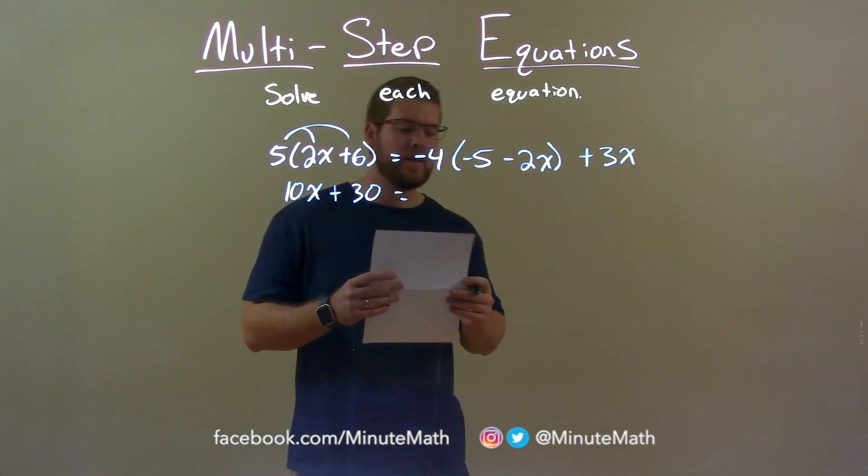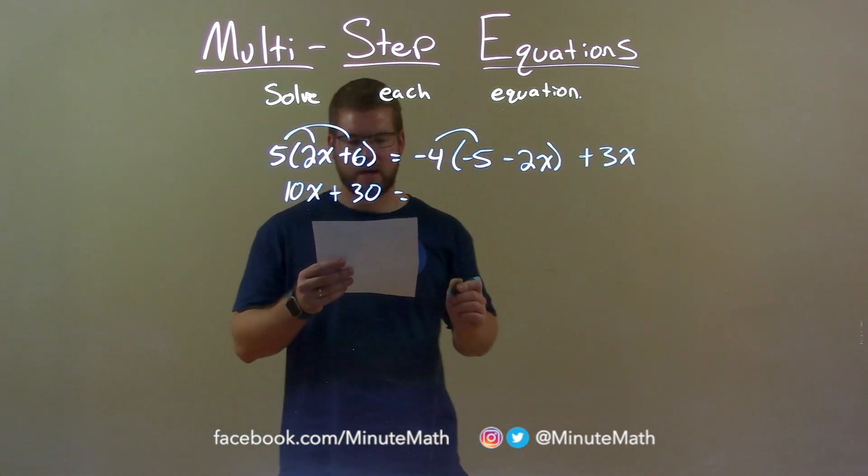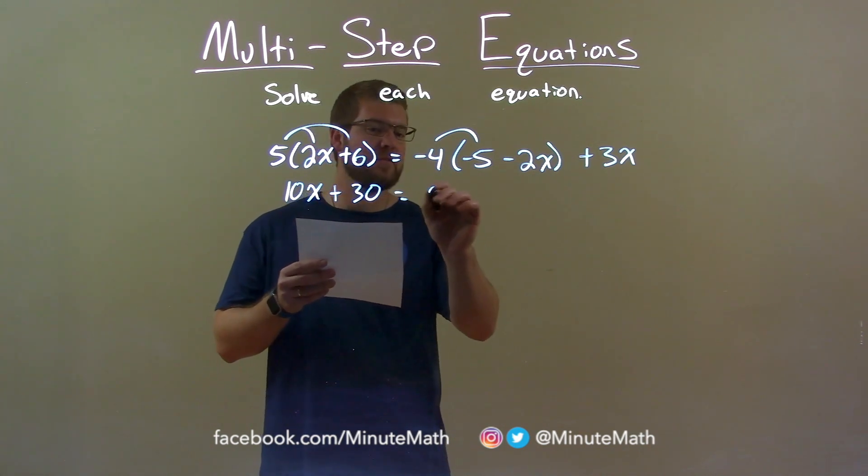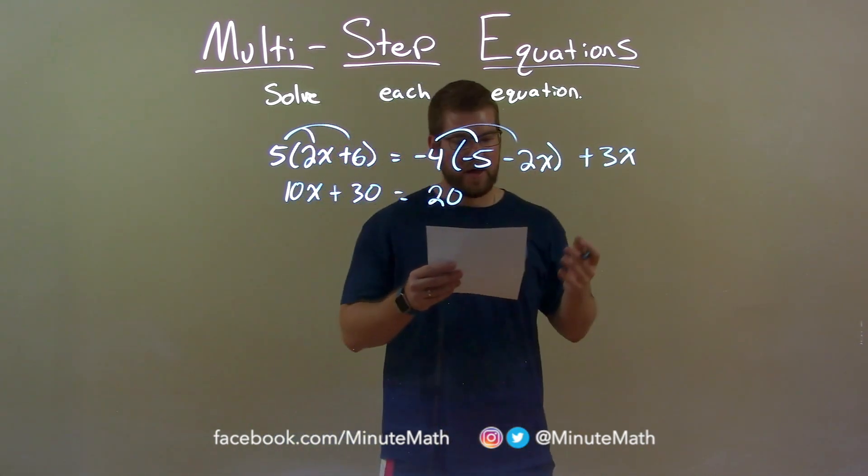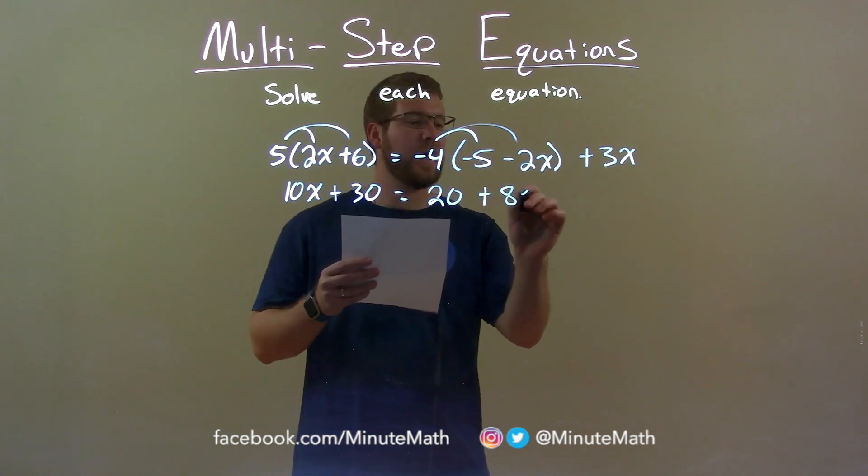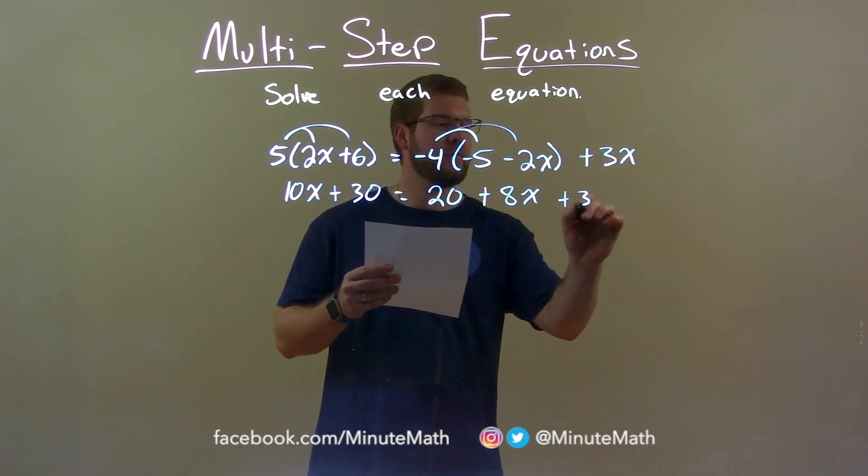We're going to do the same thing with the negative 4. Negative 4 times negative 5 is positive 20 and negative 4 times negative 2x is positive 8x. And then we bring down the 3x.